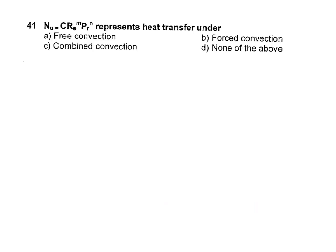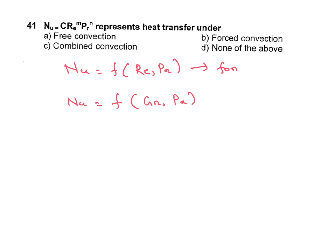The question is: Nusselt number equal to C into Re to the power m, Pr to the power n — this represents heat transfer under what condition? Nusselt number is a function of Re and Pr in the case of forced convection, and a function of Grashof number and Prandtl number in the case of free convection.